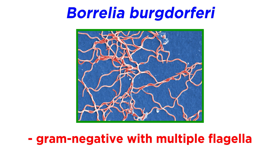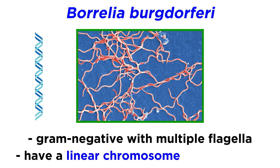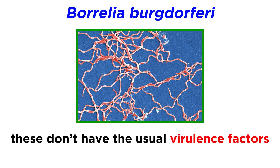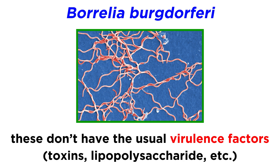These bacteria are gram-negative and have multiple flagella that give them their characteristic twisting motility. Genetically speaking, these bacteria have a linear chromosome, which is quite unusual in the bacterial world, in addition to a large number of smaller DNA molecules, or plasmids. Interestingly, these bacteria don't have the usual virulence factors — the factors that many bacterial pathogens typically have to cause damage, such as toxins or lipopolysaccharide.